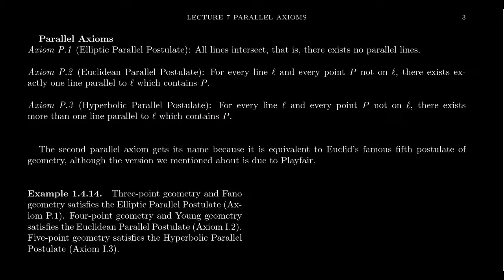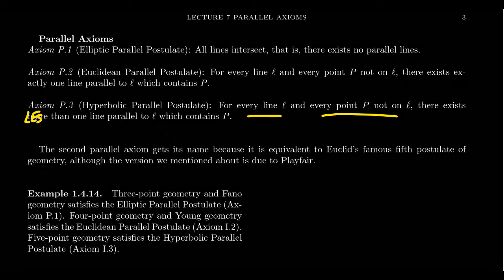The elliptic parallel postulate could be rewritten in harmony with the others: for every line and every point not on it, there exists less than one line parallel to it — meaning zero lines parallel to it, so no parallel lines exist. So given any line and one point off the line, how many parallel lines do you have? Less than one, exactly one, or more than one? Those are the three parallel alternatives, and they are mutually exclusive.